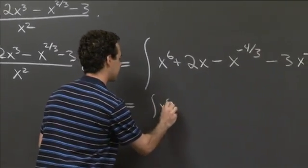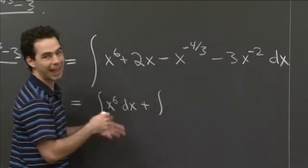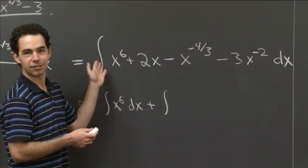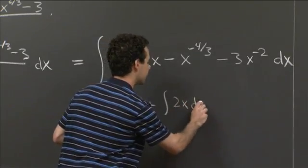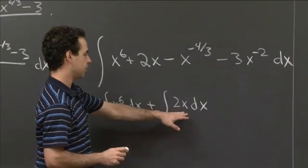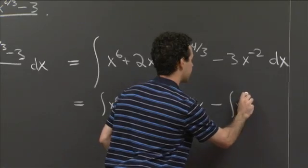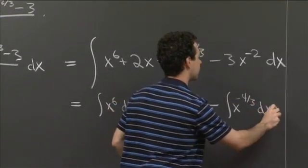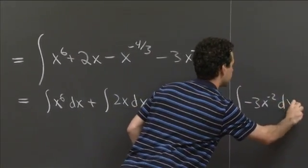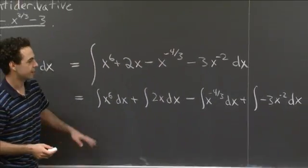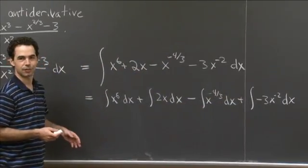So we can write this out into its constituent parts. It's the antiderivative of x to the sixth dx plus the antiderivative—now, of course, you don't have to do this. You could probably proceed just from this step onwards. But I don't see any harm in actually splitting it up. So antiderivative of 2x dx minus x to the minus 4 thirds dx plus minus 3x to the minus 2 dx. I just split it up into a bunch of pieces.